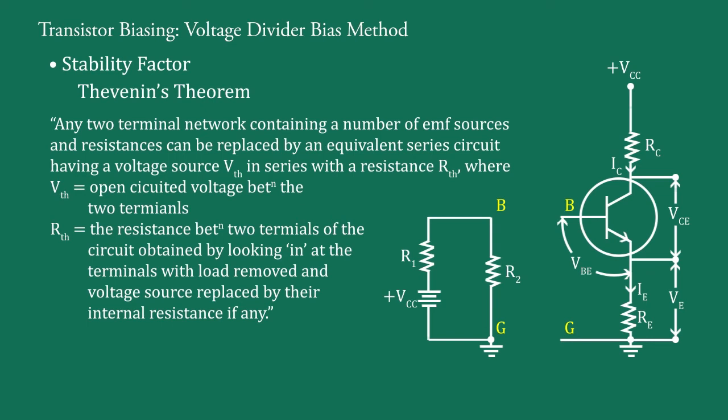For RTH with load removed, in our circuit no load, so skip this part. Next, voltage source is replaced by their internal resistance. It means internal resistance of supply VCC.